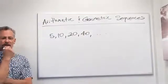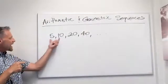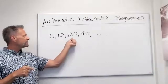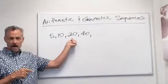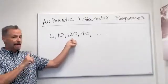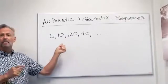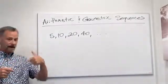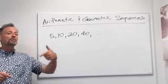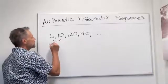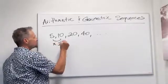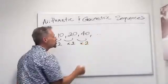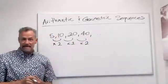We may look at this and say, if I add 5 I get 10, but if I add 5 again I get 15, not 20. So it can't be an arithmetic sequence. But obviously we may look at this and see the pattern — we multiply by 2. So this is times 2, times 2, times 2, times 2. The next number, of course, would be 80.